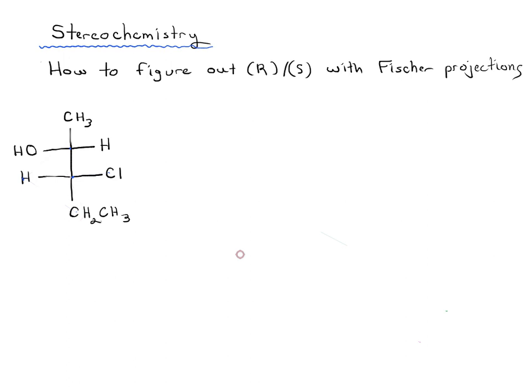In this video we're going to go through how to figure out R or S configuration of molecules that have been drawn as Fischer projections. Here I've drawn an exercise. If you could look at this molecule, maybe press pause, work on this by yourself, and try to figure out R or S for each of the stereocenters in this molecule. When you're ready, press play and we'll go through it.